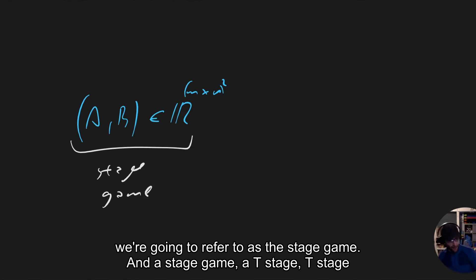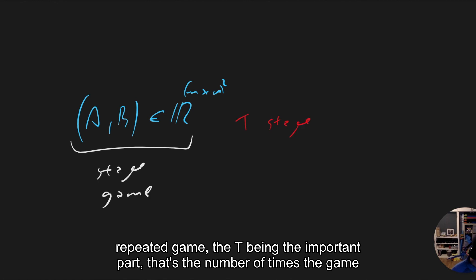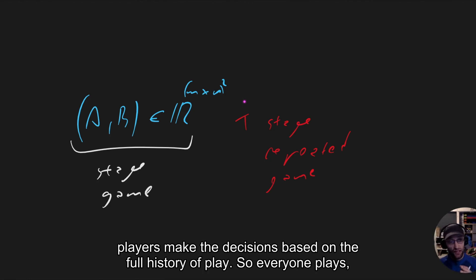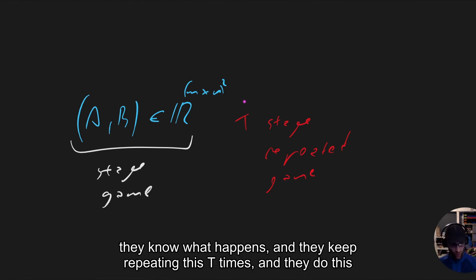A T-stage repeated game, where T is the number of times the game is repeated, is a game in which players play that stage game T times. The players make decisions based on the full history of play. So everyone plays, they know what happens, and they keep repeating this T times.